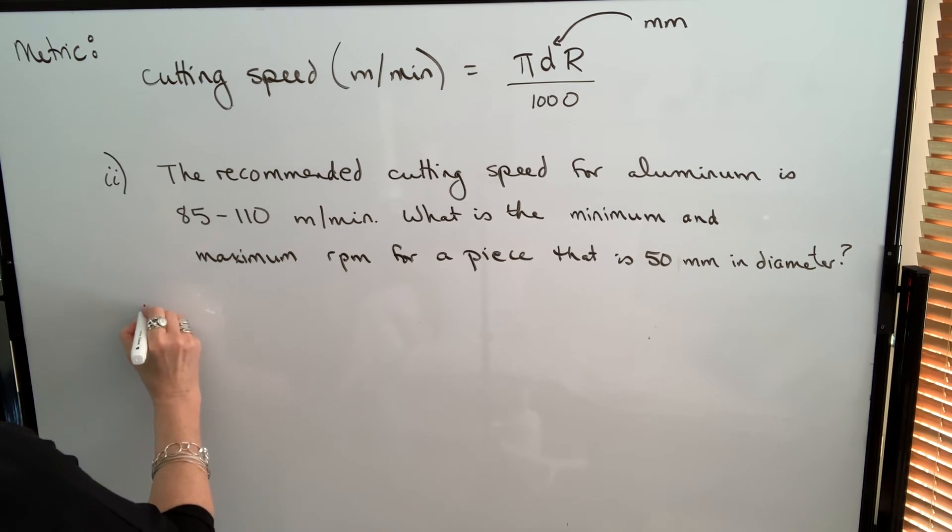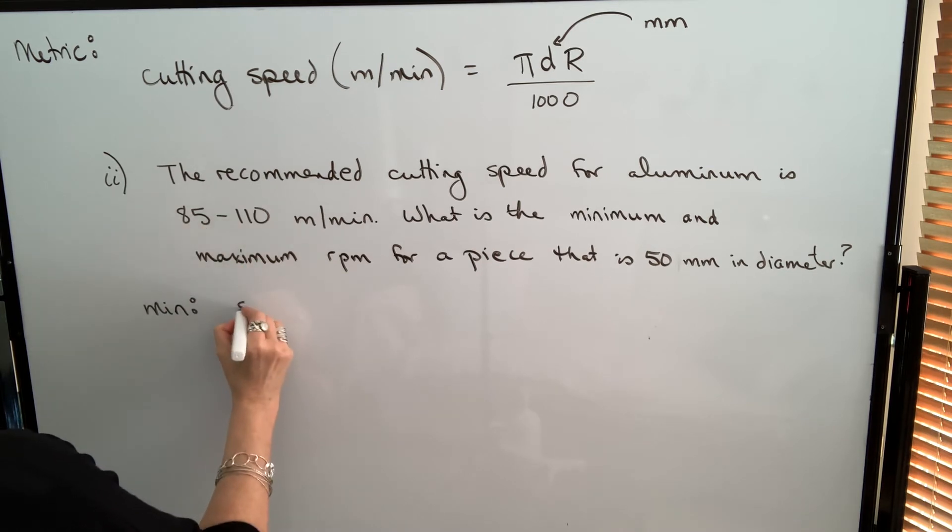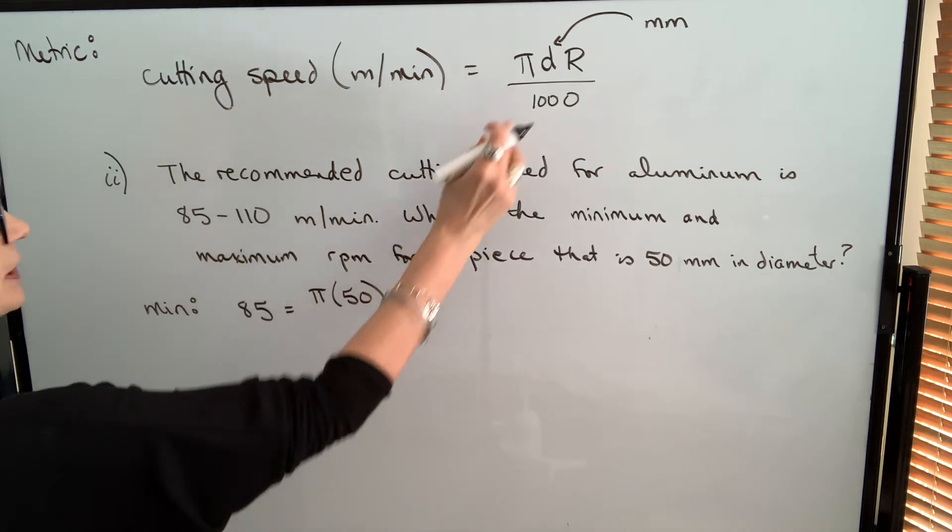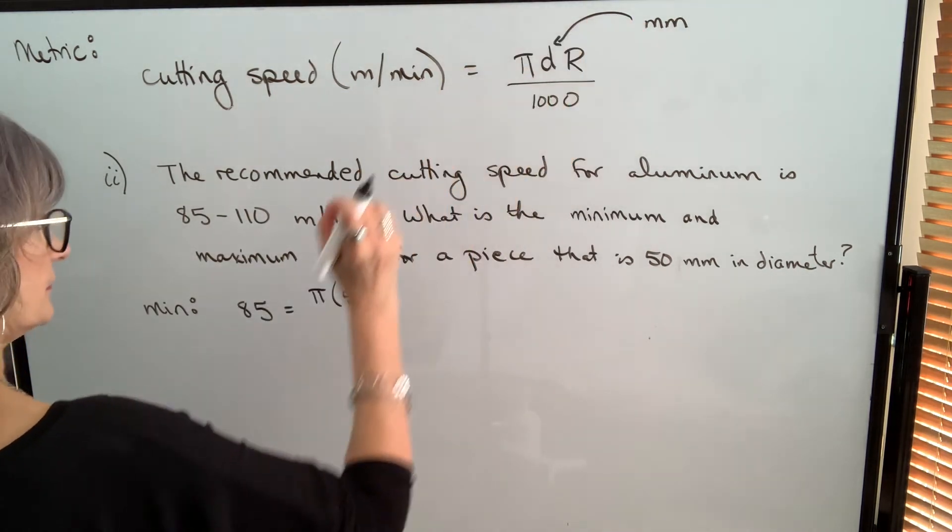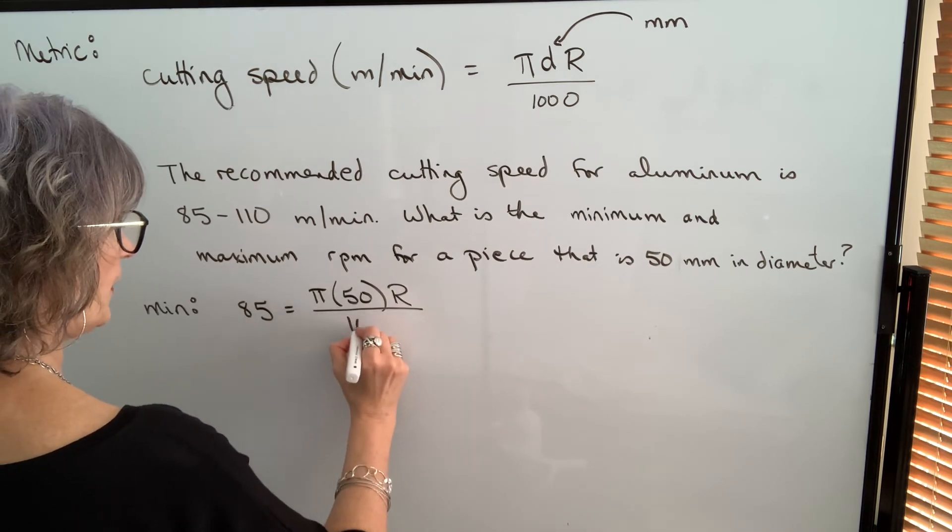In order to find the minimum, I plug my cutting speed, my minimum cutting speed of 85. The diameter is 50 millimeters, and just make sure that it's in the unit that is in our formula, times r over 1,000.